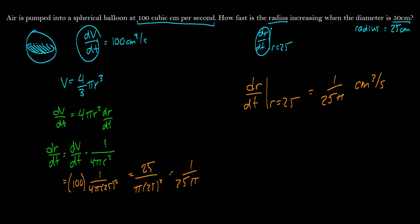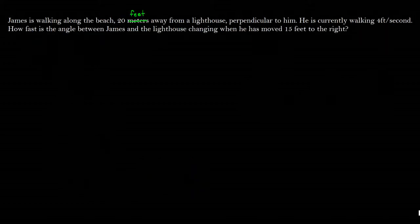So I'm not going to give you guys a practice question on this one because this question is a little bit too difficult for a practice question. So I'm going to go through it with you guys. James is walking along the beach 20 feet away from a lighthouse perpendicular to him. So let's do a picture. Here's James. He's pink because boys can be pink in this day and age. It's totally okay.